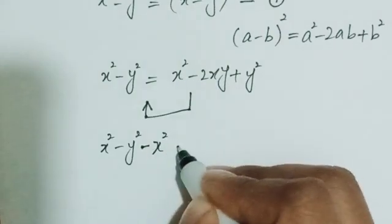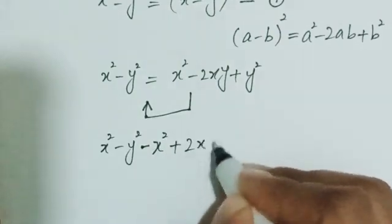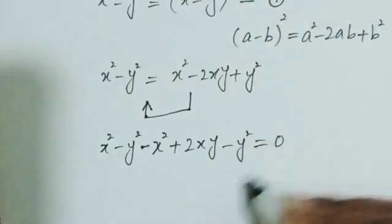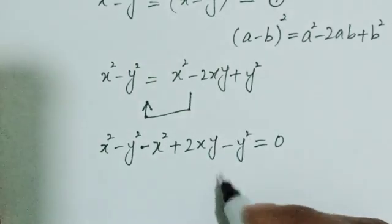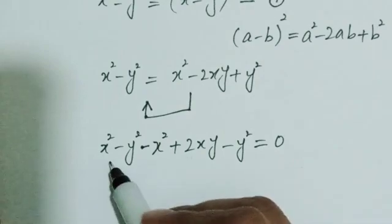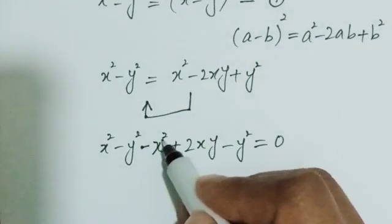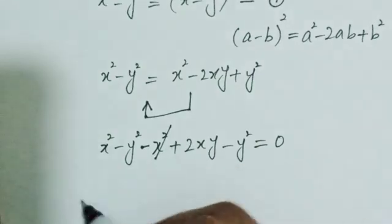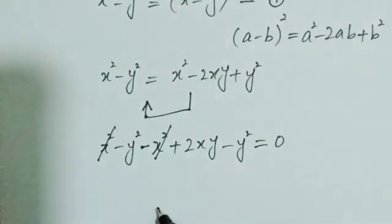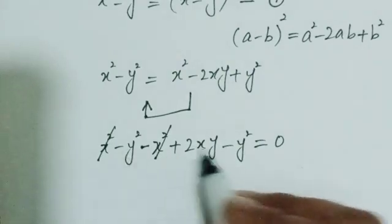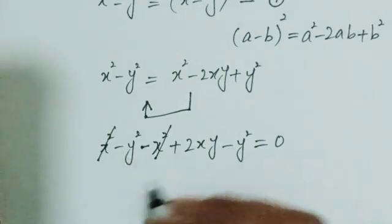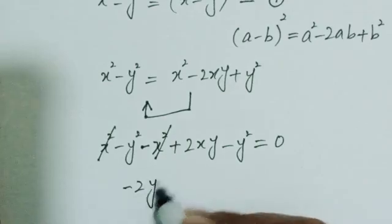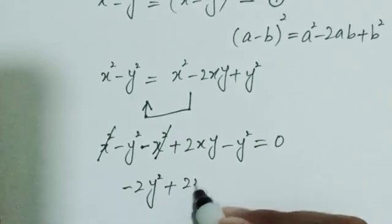I can write it as x squared minus y squared, and the signs will change — plus becomes minus — so: x squared minus y squared minus x squared plus 2xy minus y squared equals zero. Let's cancel the terms with opposite signs.